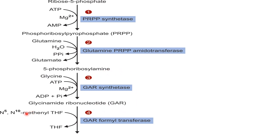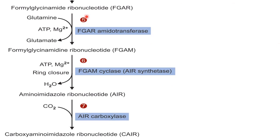One carbon group from N5,N10-methylene-THF is transferred to glycinamide ribonucleotide by glycinamide ribonucleotide formyltransferase, synthesizing C8 of the purine ring to form formylglycinamide ribonucleotide (FGAR). Then, the amide group from glutamine is transferred to FGAR by formylglycinamide ribonucleotide amidotransferase, converting it to formylglycinamidine ribonucleotide (FGAM), which synthesizes N3 of the purine ring.